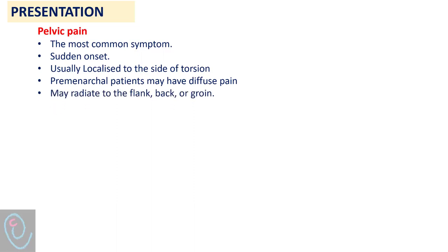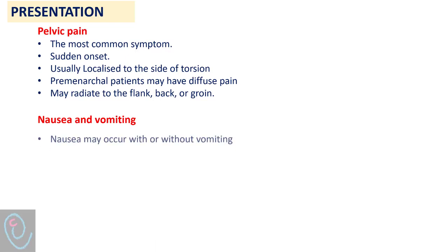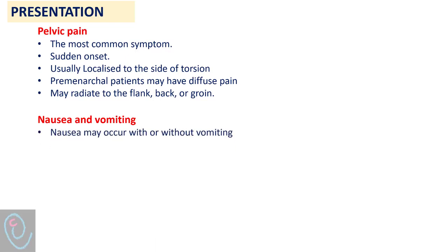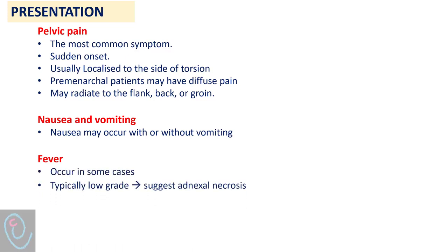The pain can radiate to the flank, back, or groin. Nausea and vomiting are common symptoms associated with ovarian torsion. Fever can present in some cases of ovarian torsion, but it is typically of low grade.